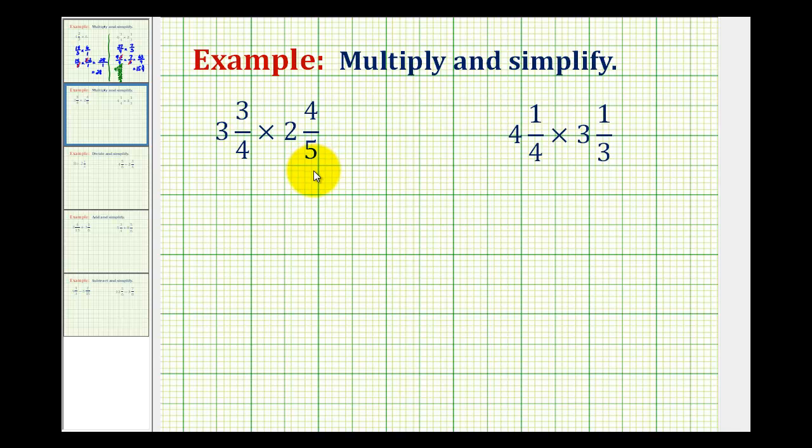The first step in multiplying with mixed numbers is to rewrite the mixed numbers as improper fractions. So for three and three-fourths, we'll have four times three, that's twelve, plus three.